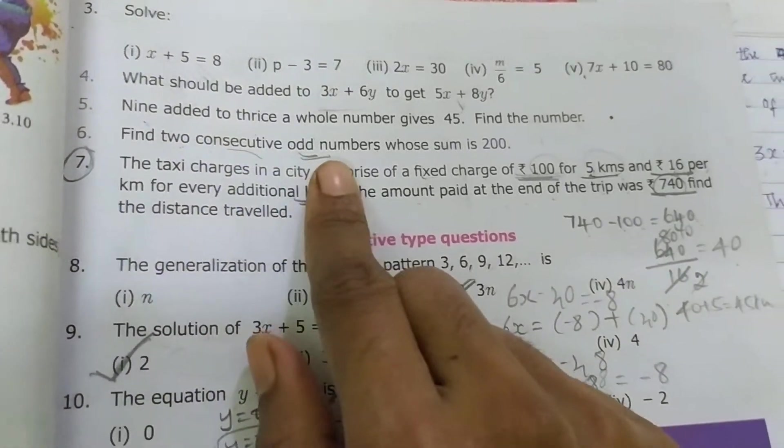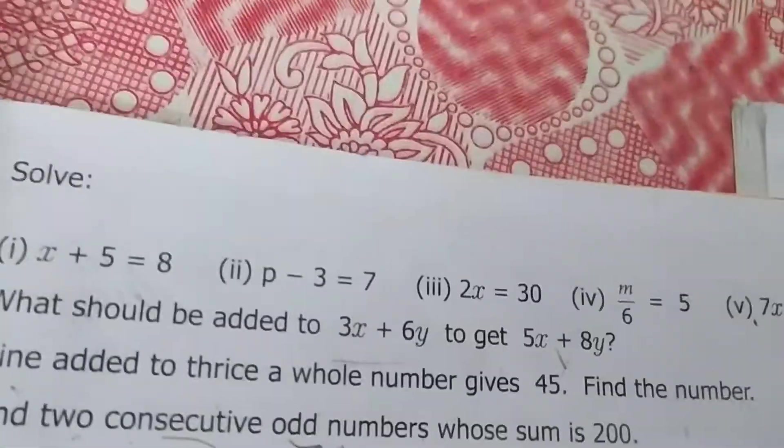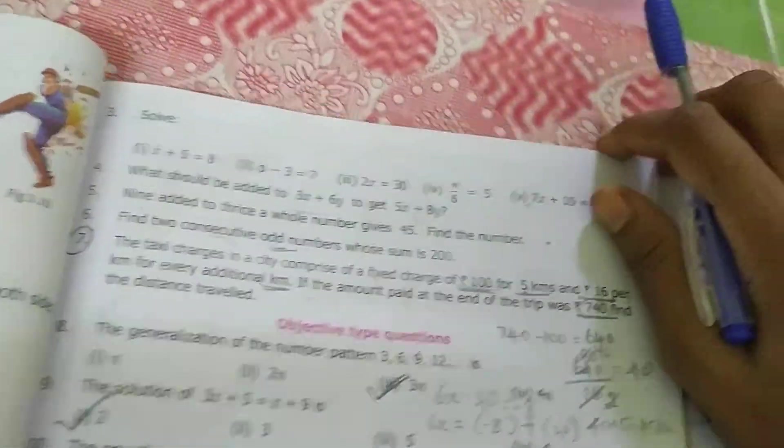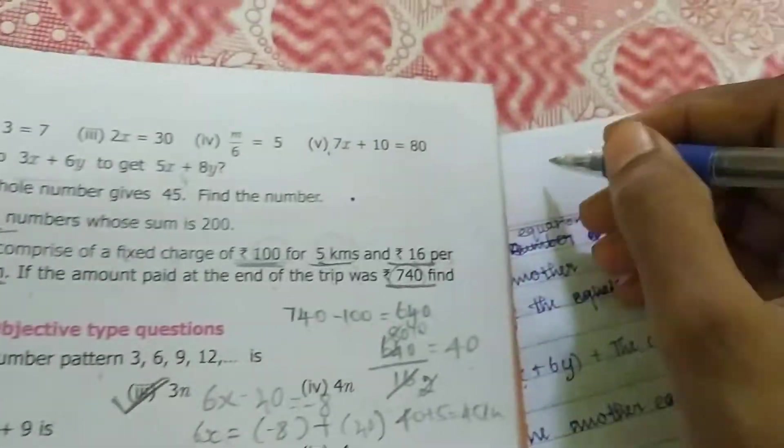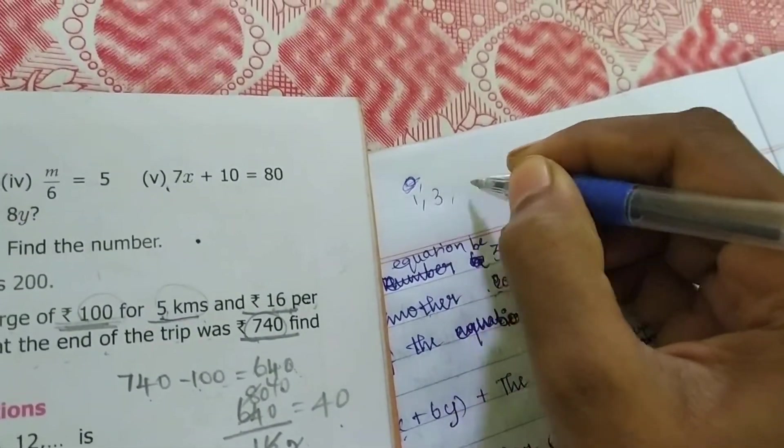Sixth question: find two consecutive odd numbers whose sum is 200. They are asking for consecutive terms. Consecutive odd numbers means what? One, three, five like this.